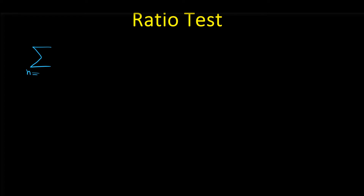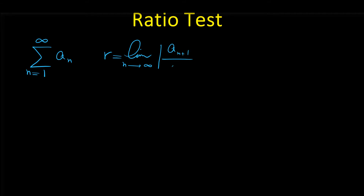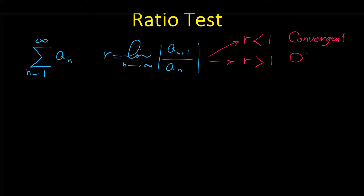Consider the infinite series sigma from n equals one to infinity of a sub n, where a sub n is not equal to zero. Let r equal the limit as n approaches infinity of the absolute value of a sub n plus one over a sub n. If r is less than one, the series is convergent. If r is greater than one, the series is divergent.